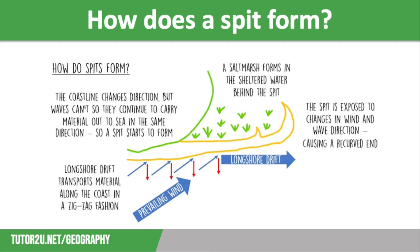The end of the spit will also have a recurved, hooked end. This is because the dominant wind direction has changed, blowing material back towards the coast slightly.